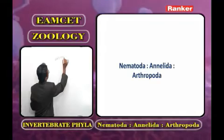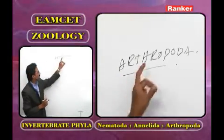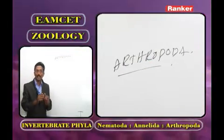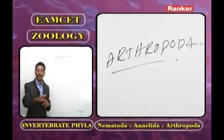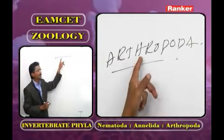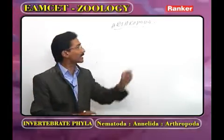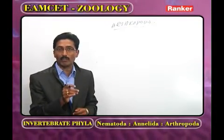The next phylum is Arthropoda. From the MCQ perspective, what is the biggest phylum in the kingdom Animalia? Arthropoda. Among invertebrates, the true terrestrial invertebrates are arthropods. They are adapted for the terrestrial environment because water conservation methods are present in their body. One such method is that the body is covered and protected by a chitinous cuticle, which prevents the loss of water.